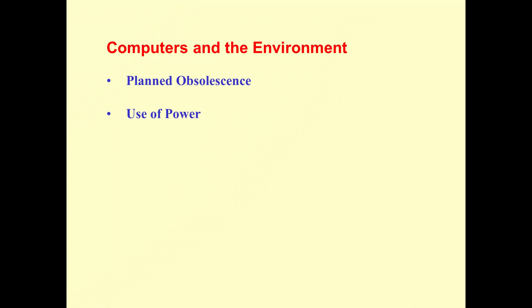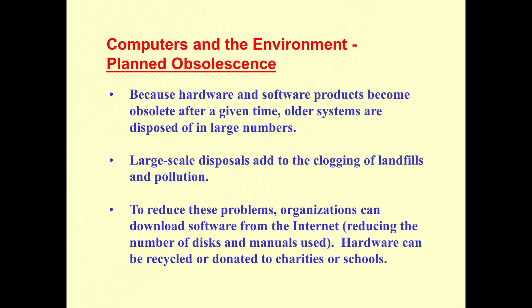Finally, let's look at computers and the environment — how computers affect the natural environment and how much power computers consume. The first issue is planned obsolescence: because hardware and software products become obsolete after a given time, older systems are disposed of in large numbers.